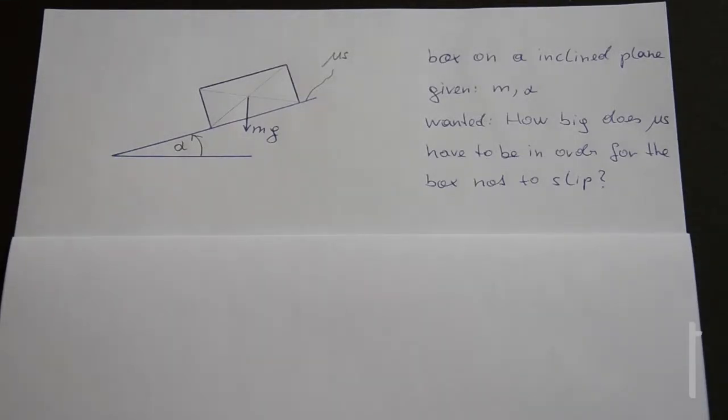And if μs was really small, for example, the surface would be rather smooth. μs usually has values between 0 and 1, but it can be bigger than that. It is possible for μs to have a value like 5 or greater.